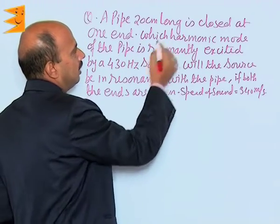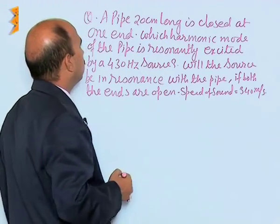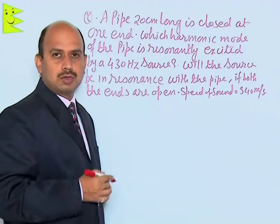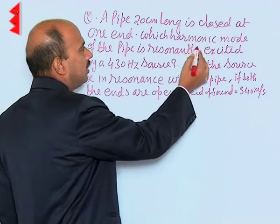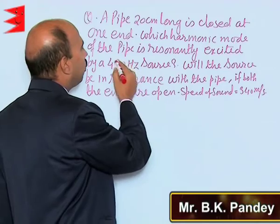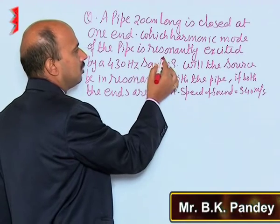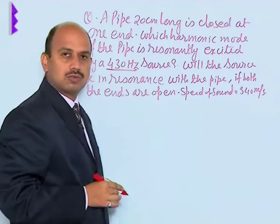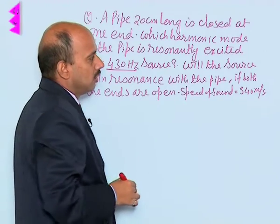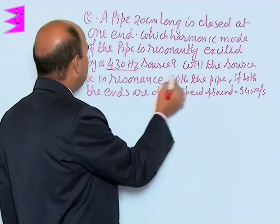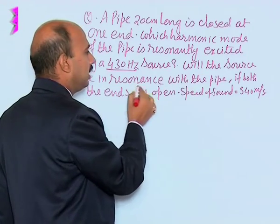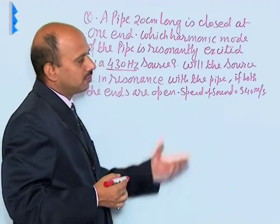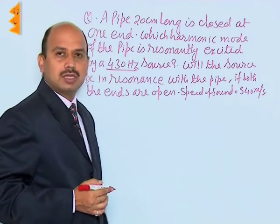A pipe 20 centimeters long is closed at one end — an example of a closed organ pipe. Which harmonic mode of the pipe is resonantly excited by a frequency of 430 hertz source? We need to determine if the source will be in resonance with the pipe if both ends are open. The speed of sound is 340 meters per second.